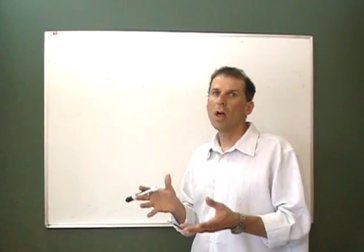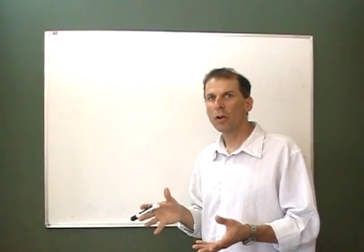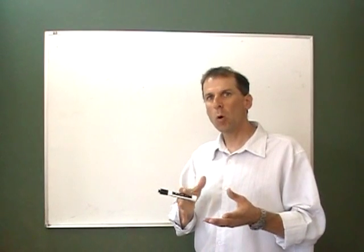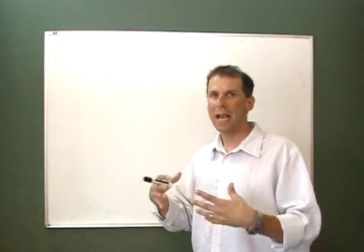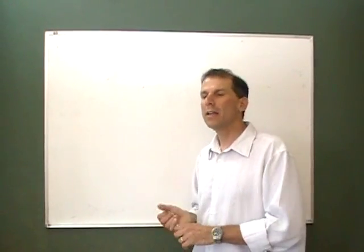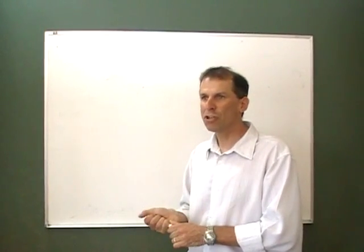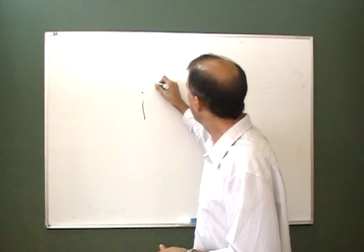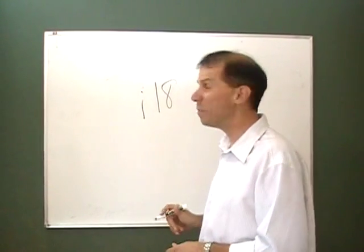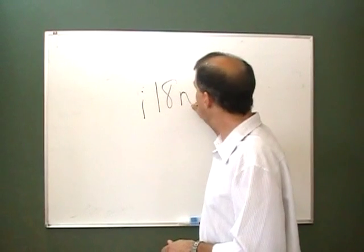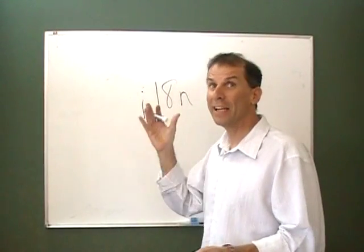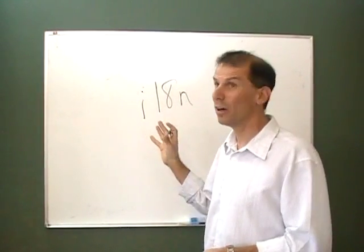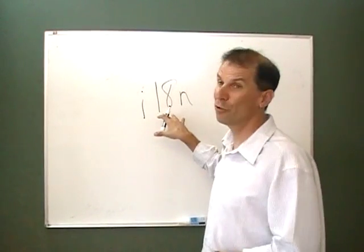In software terms, that's when we make product so that it's ready to support any language, any locale. And by internationalization, you see that commonly abbreviated as an I, 18, the 18 is for 18 letters in the middle, and an N at the end. Count it out if you like. Internationalization, long word, 20 letters reduced to four.